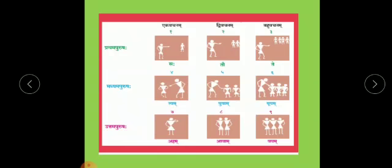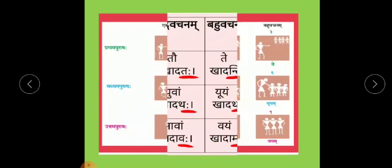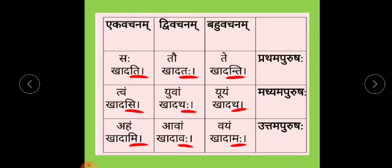The second person 'you' is Madhyama Purusha, and he, she, it — they are Prathama Purusha, that is the third person. We have also seen this triple: Ek Vachanam, Dvi Vachanam, Bahu Vachanam for Prathama Purusha, Madhyama Purusha, and Uttama Purusha.